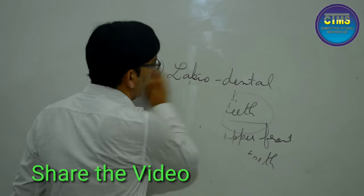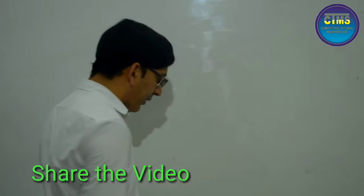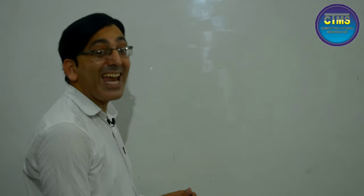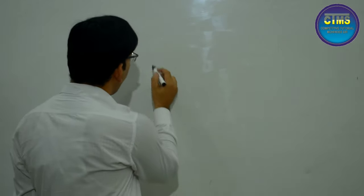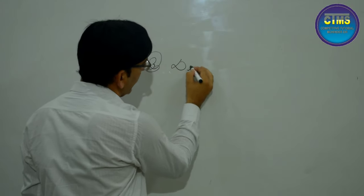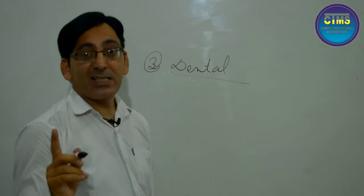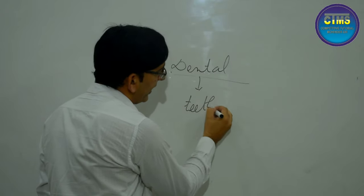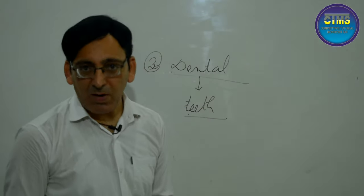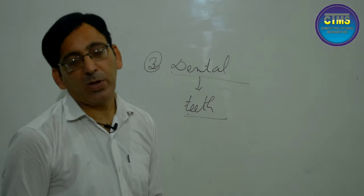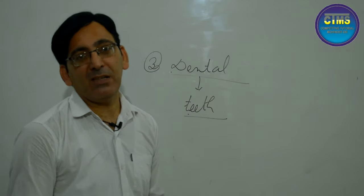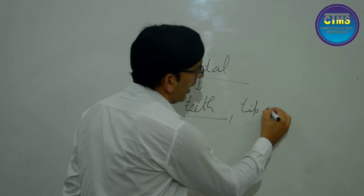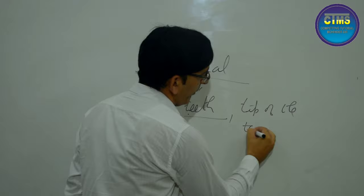The third category is called dental. Dental comes from the word for teeth, so the passive articulator is the teeth. The active articulator is the tip of the tongue. The tip of the tongue touches the inner part of the upper teeth to produce dental sounds.